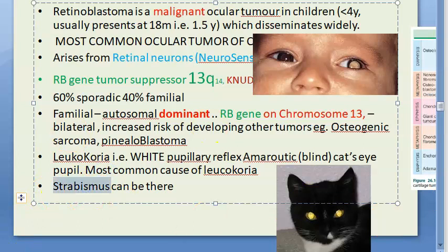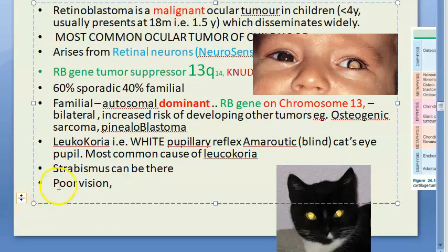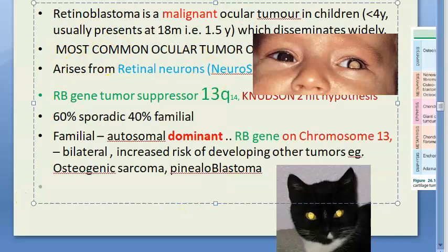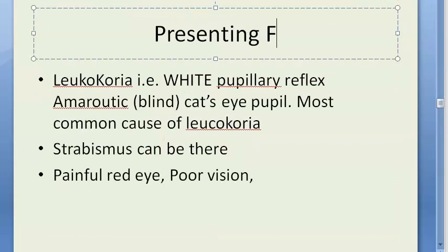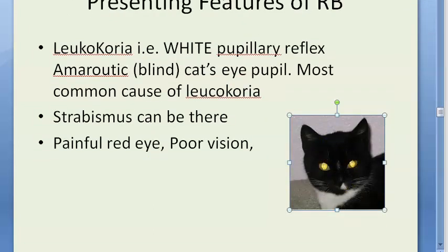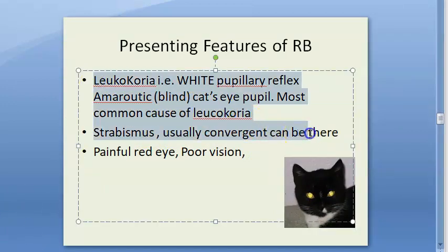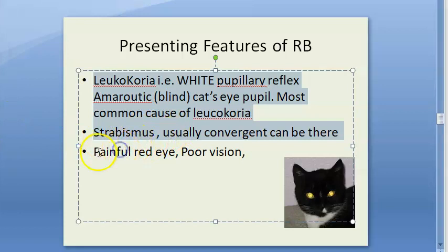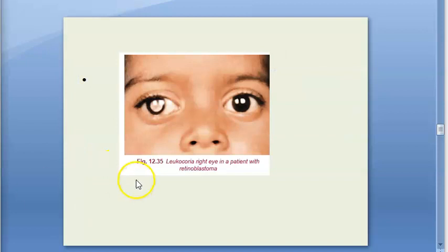Other presenting features include strabismus (squint) and poor vision. The textbook also mentions painful red eye. If only these features are present without pain, it is called a quiescent presentation; if pain is present, it is a painful presentation. The child will usually be less than four years of age.